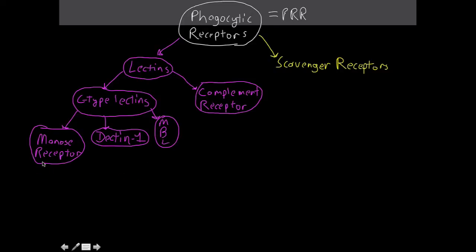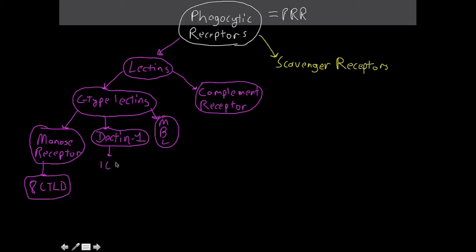For the mannose receptor specifically: it's very large, with eight C-type lectin domains and two R-type lectin domains — you don't need to know the R-type details. Dectin-1 has only one C-type lectin domain.